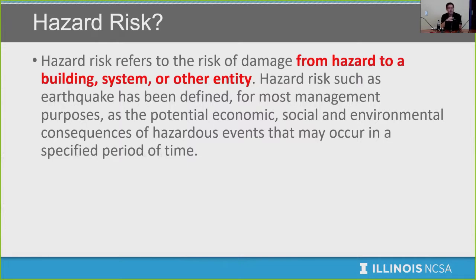Hazard risk refers to the risk of damage from a hazard to a building system or other entities. We need to define what buildings and systems in society means. Some groups define that as built-in infrastructure, which includes buildings, bridges, pipelines, transportation, road networks, rail networks, and things like that. Others include different kinds of systems as well. Especially, earthquake hazard risk has been defined as the potential economic, social, and environmental consequences when those events happen within a specified period of time. If you quickly search on Google for a hazard map or earthquake hazard map on USGS, you can find a hazard map of earthquakes in the United States. When you look at those risks, it represents some possibility of such an earthquake hazard within a specific period of time — that's a hazard risk.